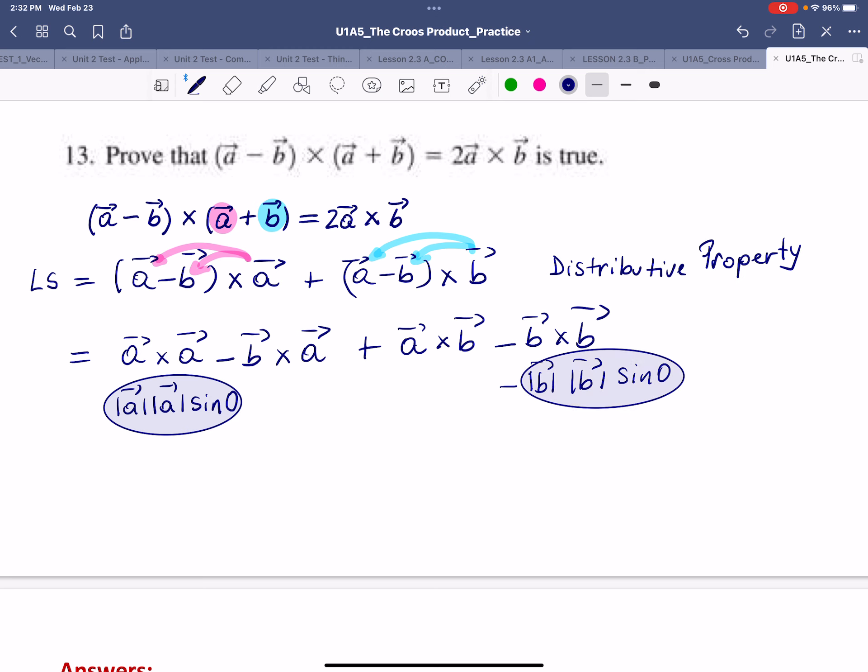So we're going to say that we're left with the following. We have negative B cross A plus A cross B.